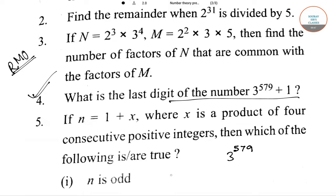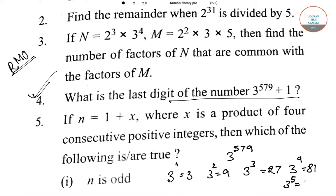If you look carefully, you will see that the powers of 3 follow a certain pattern. 3 to the power 1 equals 3, 3 squared equals 9, 3 cubed equals 27, 3 to the power 4 equals 81, and 3 to the power 5 equals 243. So 3 follows a cycle of last digits: 3, 9, 7, 1, and again 3. This is the cycle which the powers of 3 follow.